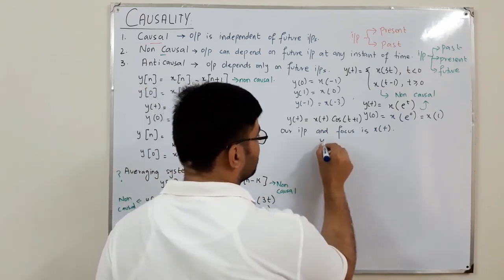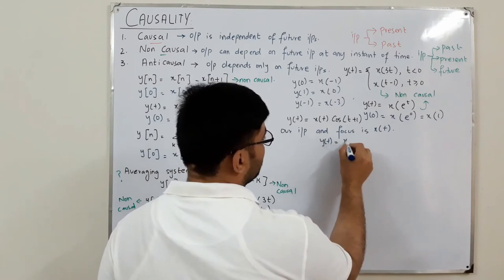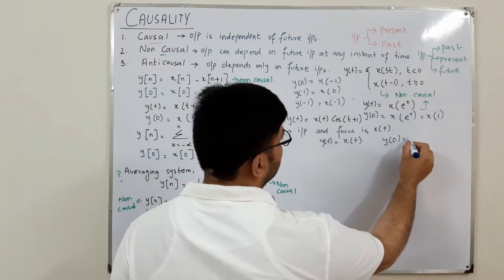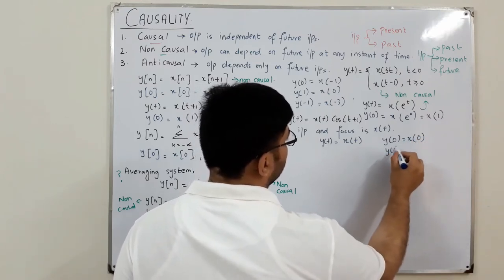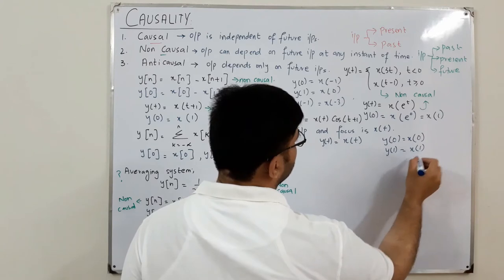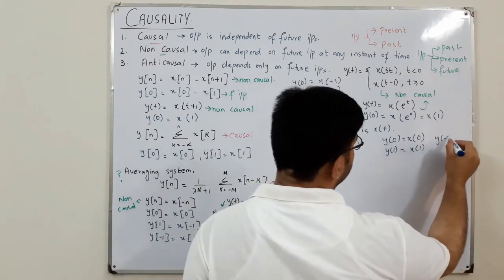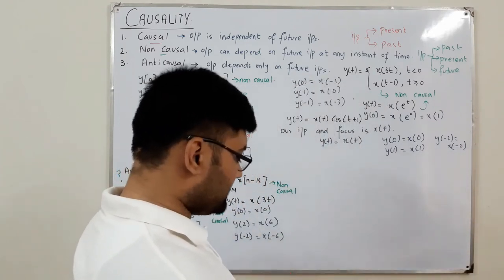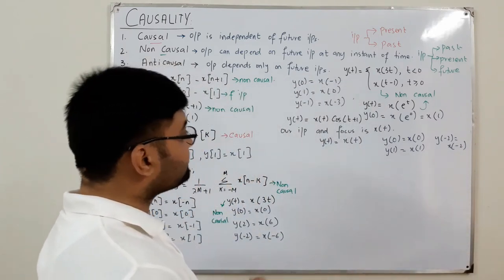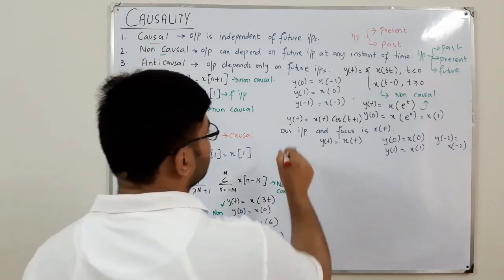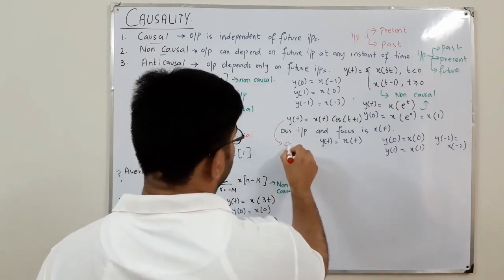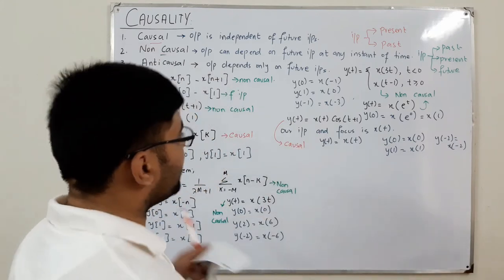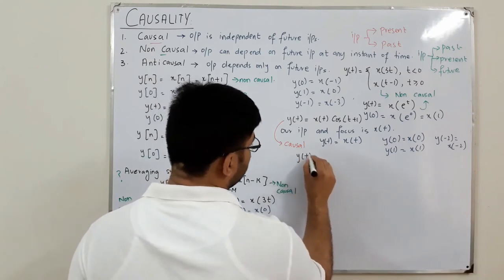Checking y(t) = x(t) · cos(t+1): y(0) = x(0), y(1) = x(1), y(-2) = x(-2). The present output depends only on the present input, so this is a causal system.